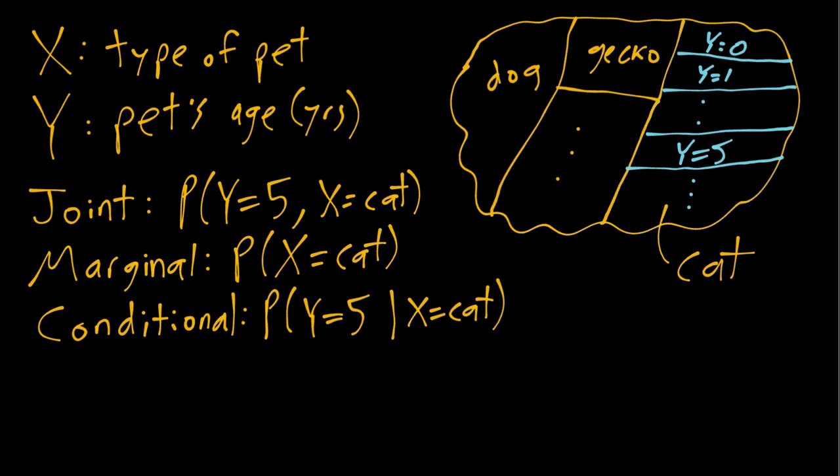And then finally the conditional probability down here, the probability of being five years old given that you're a cat, is saying let's zoom in specifically on the cat subpopulation and then ignore the dogs, ignore the geckos, ignore the entire rest of the pet population. So we're only looking at the cat subpopulation and then asking within that cat subpopulation what's the probability of this Y equals five box here compared to the total cat subpopulation.